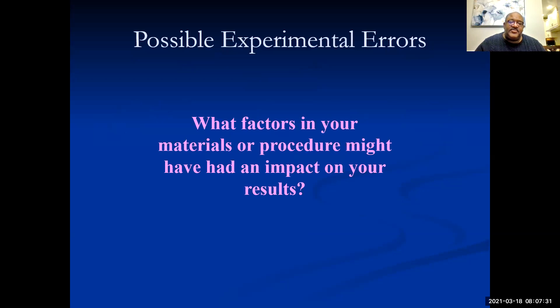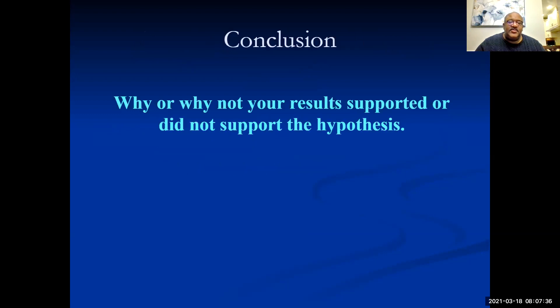What factors in your materials or procedure might have impacted your results? Those are possible errors. You have to determine why or why not your results supported or did not support the hypothesis. The conclusion is very important because it can determine whether you're going to be content and end your experimentation because you think it was valid, or whether you need to start over. So this is basically the basic things involved with experimental design. I just wanted to go through it for you so you can have this as a resource. I hope you have a great day, thank you very much.